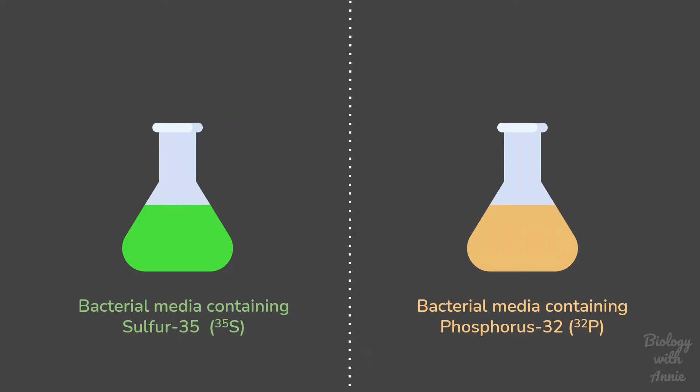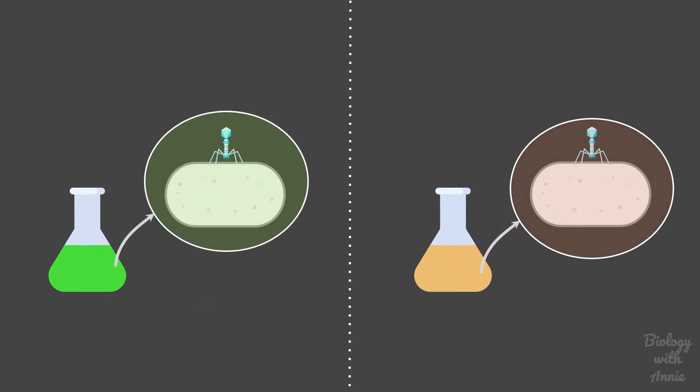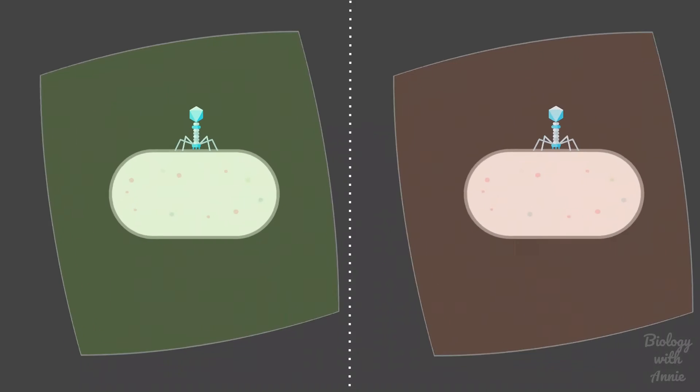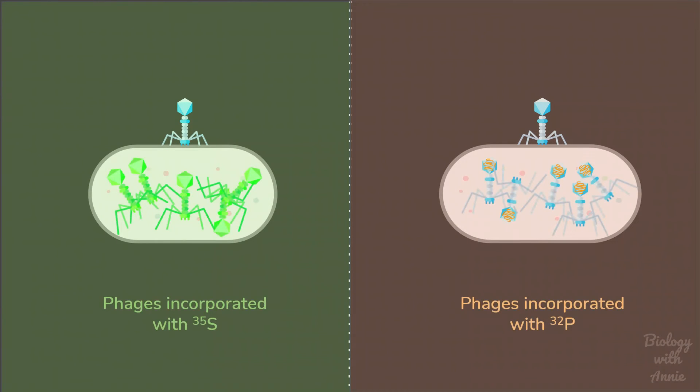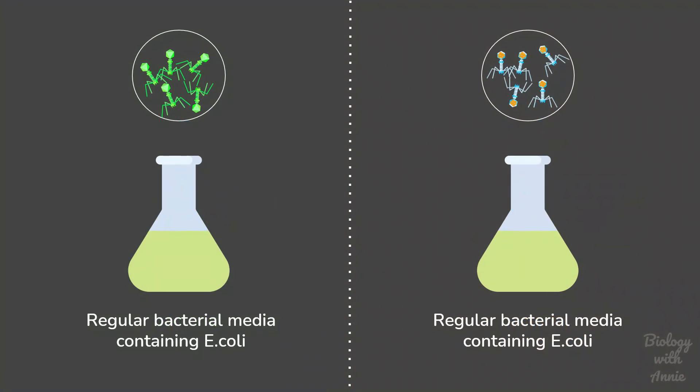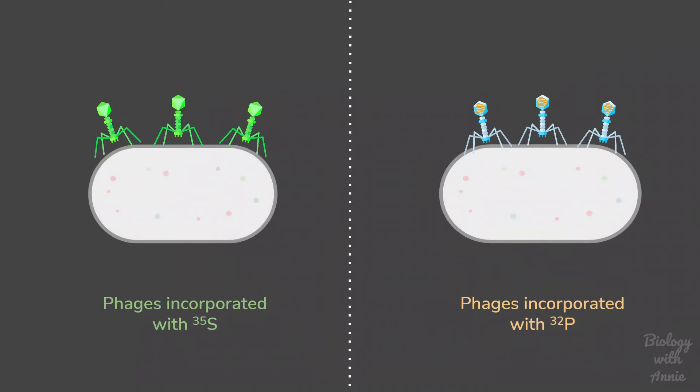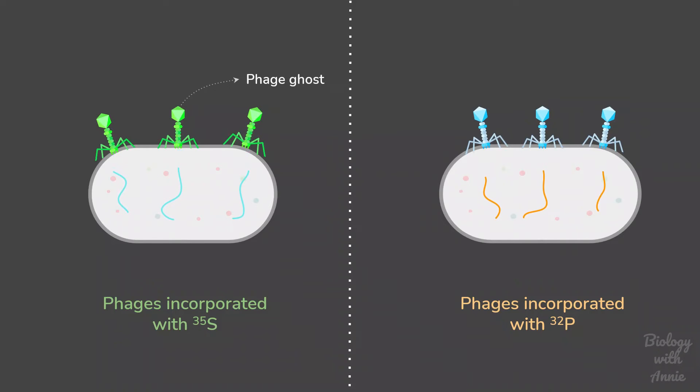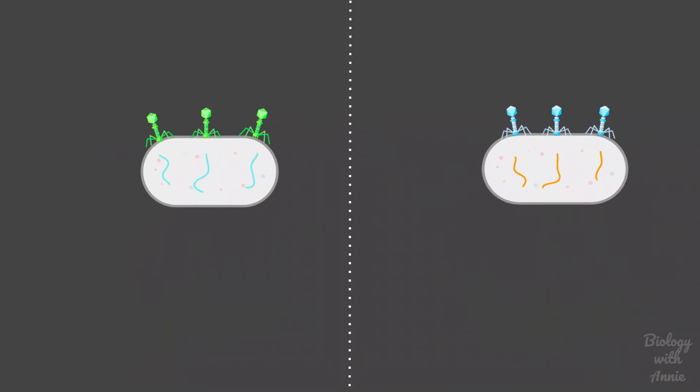When E. coli is grown and infected by T2 phage in this media, the radioactive isotopes get incorporated into the newly formed phages. These radioactive phages are then isolated and allowed to infect E. coli grown in regular media. The radioactive phages will now inject its genetic material inside the bacterial cell, leaving the empty phage body or ghost still attached to the cell wall. In order to detach the phage ghost, a blender was used to mechanically remove them from the infected bacterial cells.